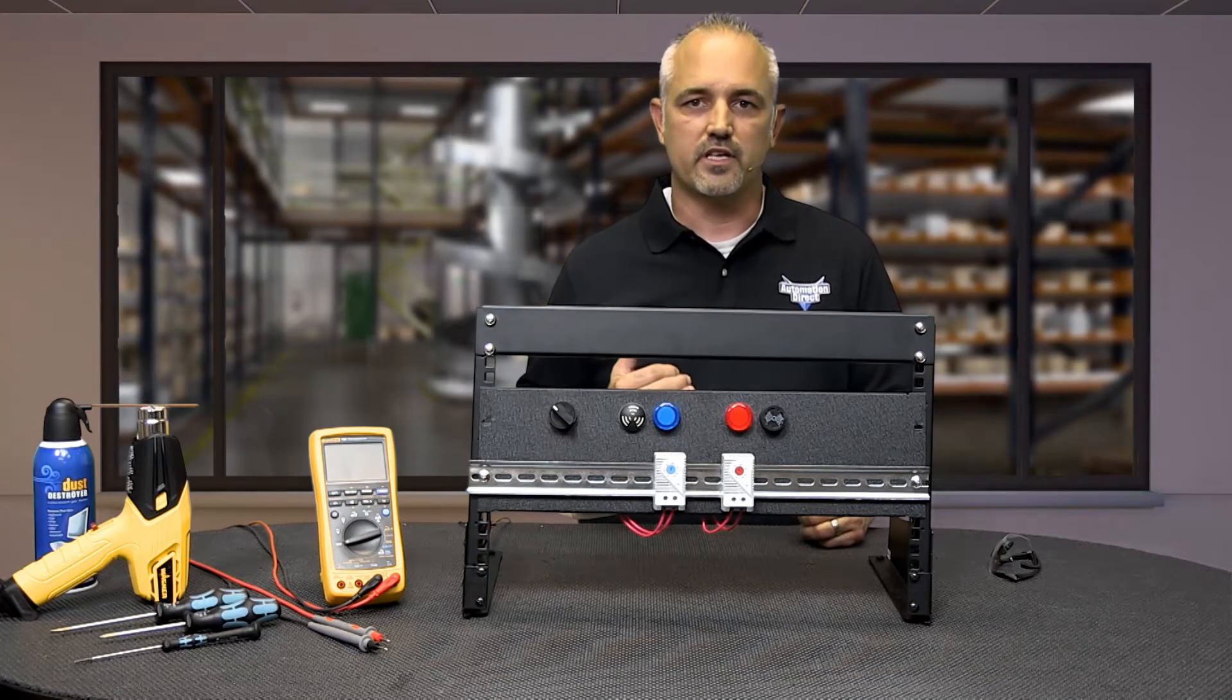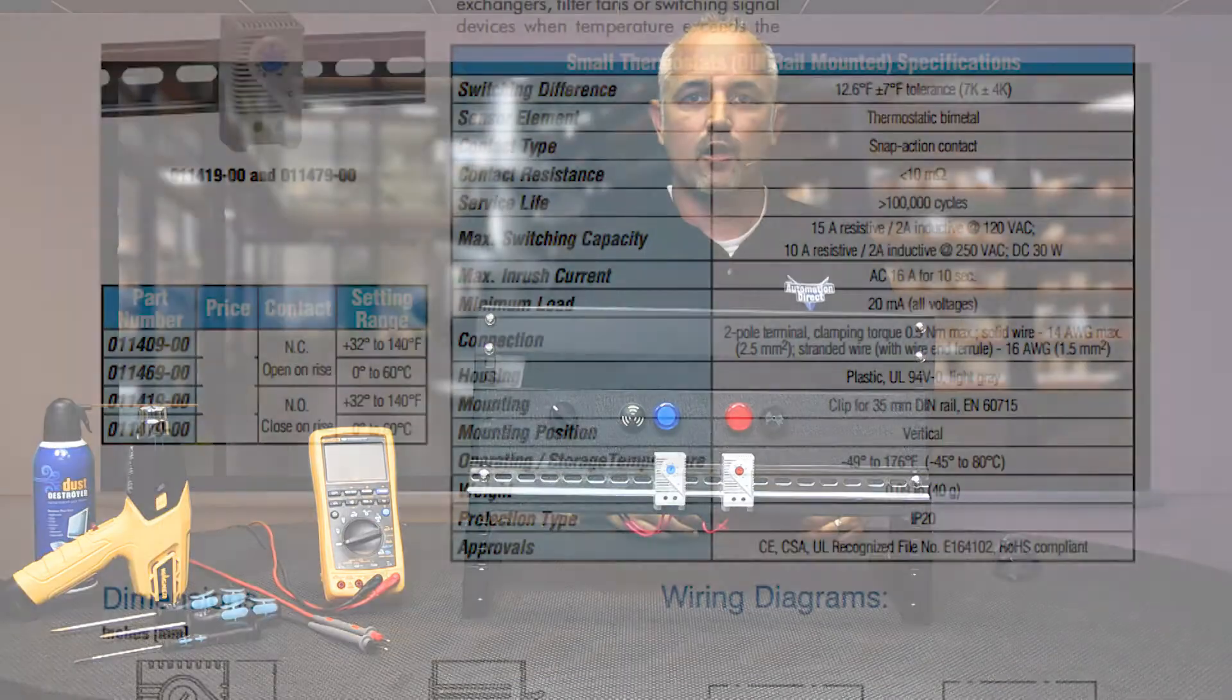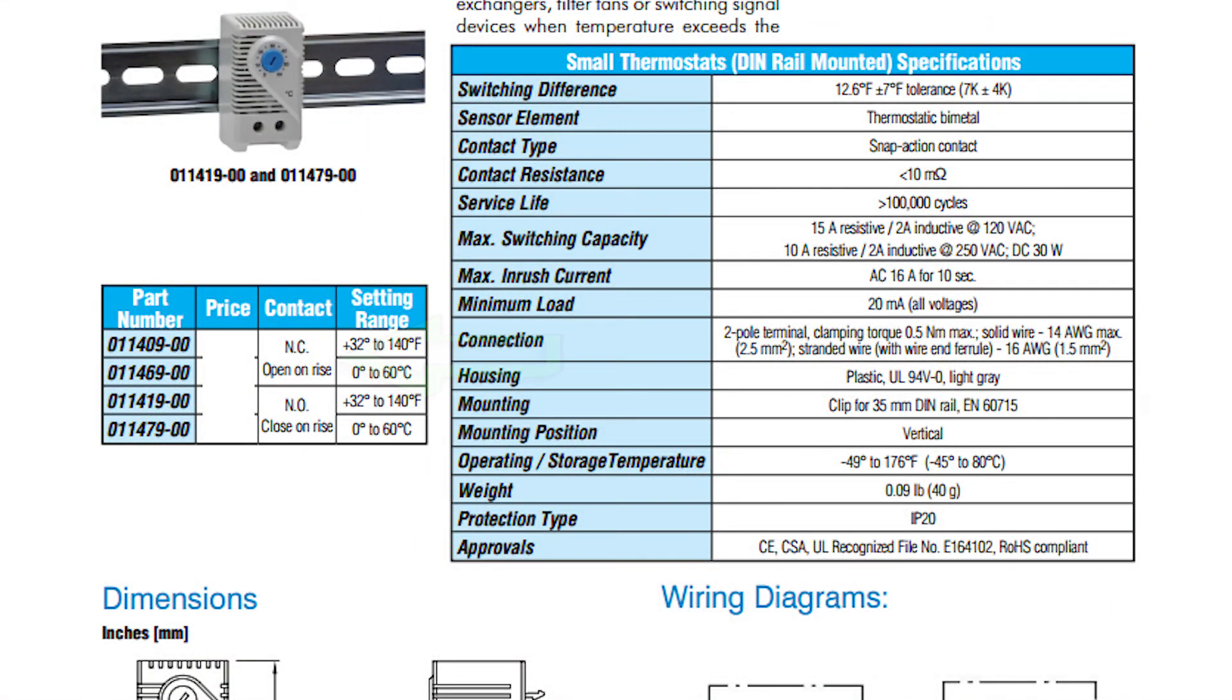Here is how these Stego thermostats operate. Normally closed is open on rise meaning the contact will close as the temperature rises and reaches the user setpoint. The contact will open turning off your device as demonstrated with the model 011409-00 with a red setpoint dial. These are used for regulating heaters or for switching signal devices.